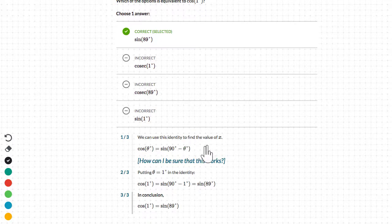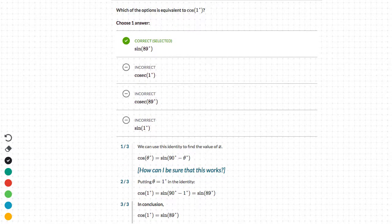So, we can use this identity to find the value of x, which is cos theta equals sine of 90 minus theta, which is what we did. So we followed the same method that Khan Academy's solution has as well.